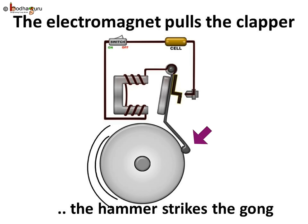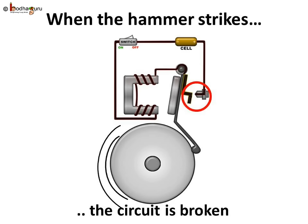In this process, the hammer at the end of the clapper strikes the gong of the bell to produce a sound. Let us see what else happened when the electromagnet pulled the clapper and we heard the hammer striking the gong.